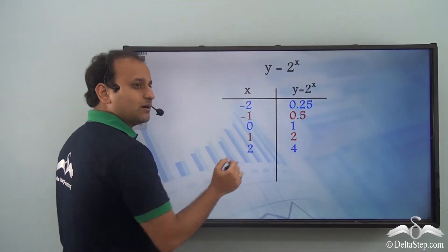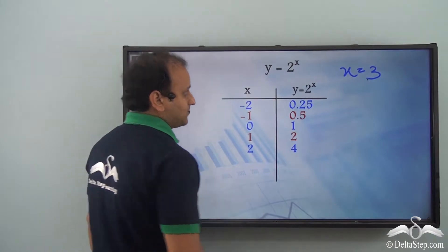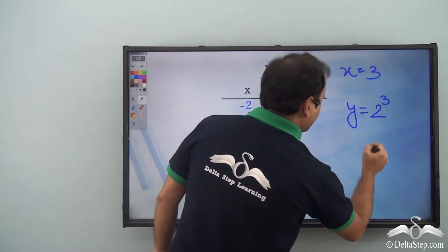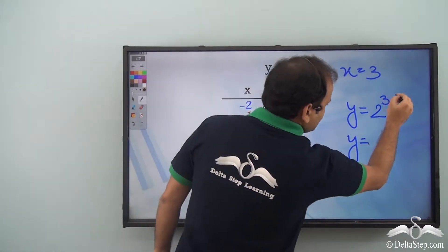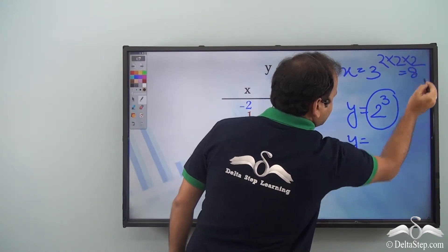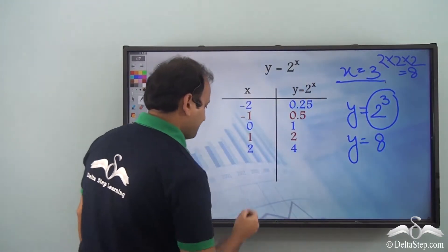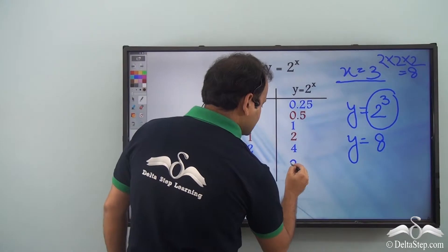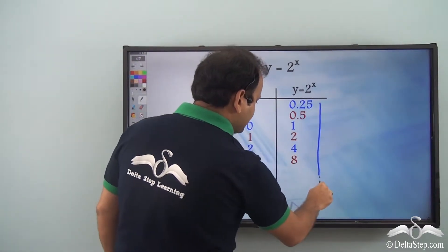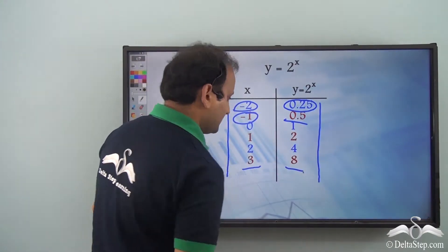Let's take just one more value and then complete the table. We've already taken up to x equals 2, so let's take x equal to 3. Then y equals 2 to the power of 3, which is 2 into 2 into 2 — that is 8. So y is equal to 8 when x is equal to 3. Now we have the complete table with all these corresponding values.